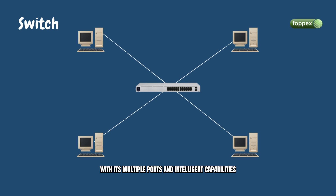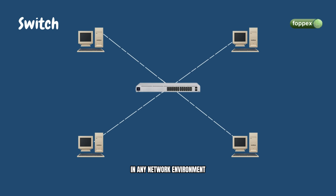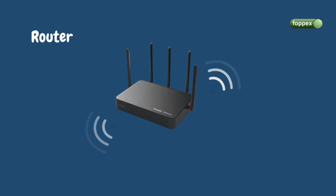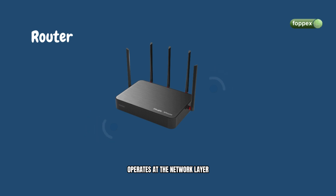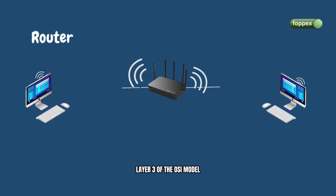With its multiple ports and intelligent capabilities, the switch not only reduces congestion but also optimizes network performance, making it an invaluable asset in any network environment. A router, on the other hand, operates at the network layer, layer 3, of the OSI model.